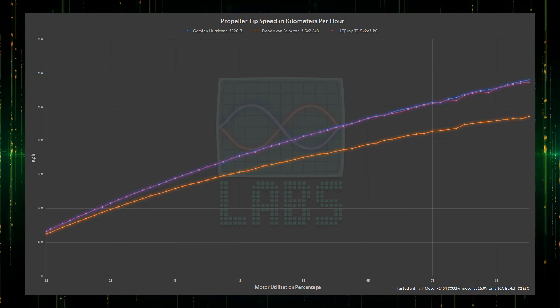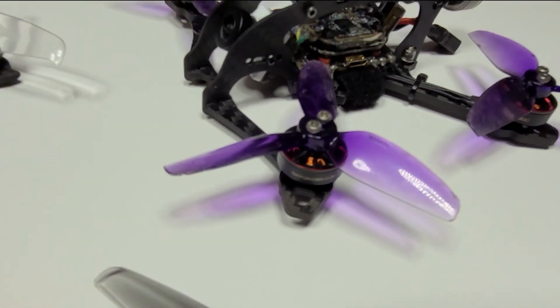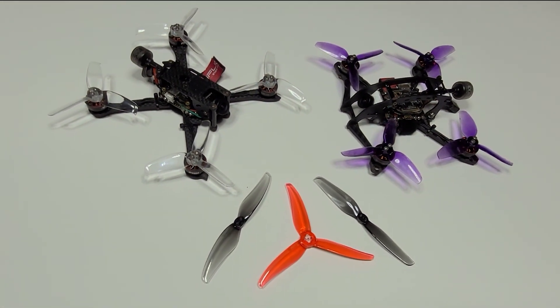It looks like the spinning 3.5-inch propeller tip speed has some room left to go faster. I wonder if these motors can run light 4-inch propellers? Hmmm...